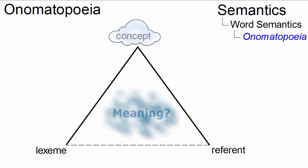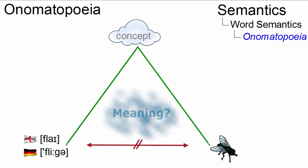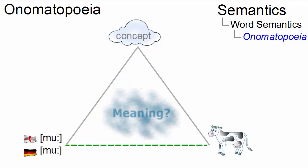Whereas the relationship between the vast majority of lexemes and their referent is an arbitrary one — like the one between present-day English 'fly' or German 'Fliege' and the actual insect, where we need an indirect relationship established via the concept in the mind — onomatopoeia establishes a direct relationship between the sounds of a lexeme and its referent, as in the example of 'moo', which stands for cow in several languages.